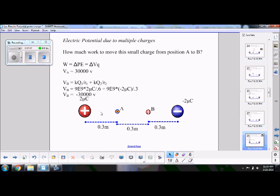So now we know our initial, because we're starting at A, our initial is 30,000 volts. Our final is negative 30,000 volts. Work is change in voltage times Q. Remember, the change in voltage is final minus initial. Cannot stress that enough.